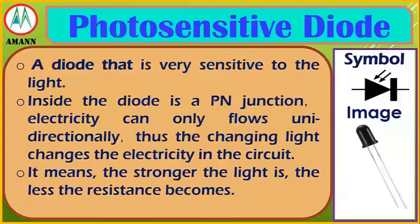Photosensitive diode: a diode that is very sensitive to light. Inside the diode is a P-N junction, and electricity can only flow unidirectionally. The changing light changes the current in the circuit — the stronger the light, the less the resistance becomes.